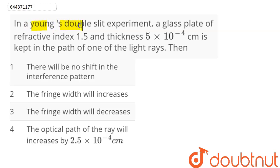Question is, in a Young's double slit experiment, a glass plate of refractive index 1.5 and thickness 5 into 10 power minus 4 centimeter is kept in the path of one of the light rays then.